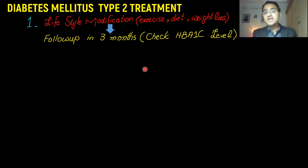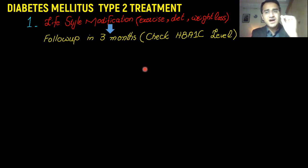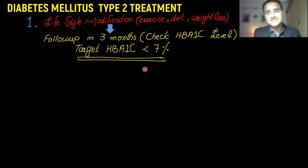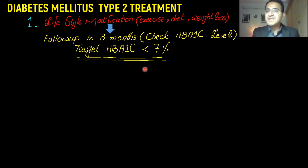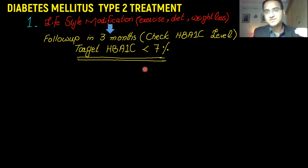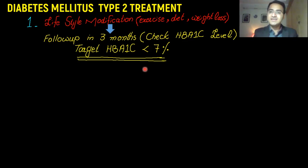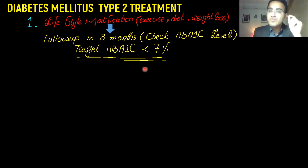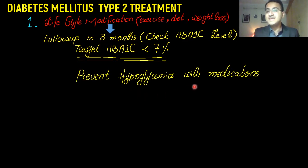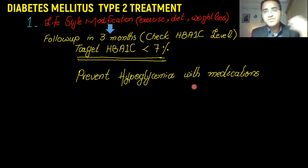At the three-month follow-up, you check their HbA1c level. If it is elevated, you begin second-line treatment. The target HbA1c level in a diabetic patient is less than seven percent. We diagnosed the patient when HbA1c was greater than 6.5%, but our target is to bring it back below 7%, because when we start medication or insulin the risk of hypoglycemia increases, and hypoglycemia can kill a patient more rapidly than hyperglycemia.